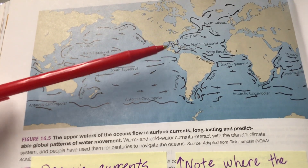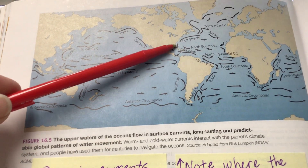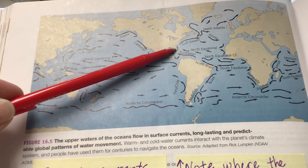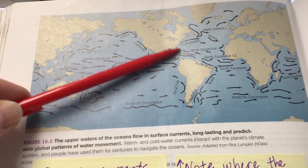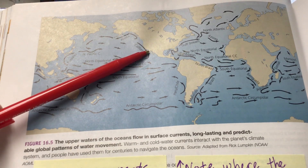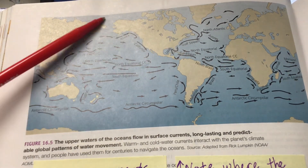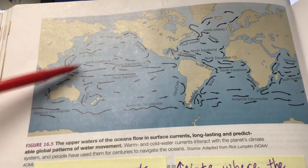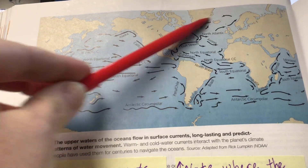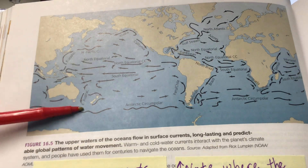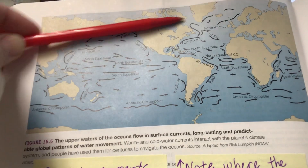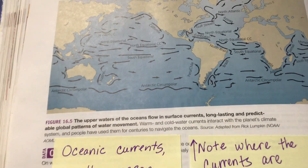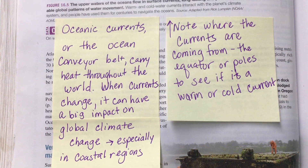If you've ever been to Florida, the Carolinas, or New Jersey in the summer, you'll notice the coastal towns are not that cool because the water is not that cool off the coast. Our coastal towns in California are very cool in the summer because the water is coming from the poles. On a test question, just be aware of where the currents are coming from. You don't need to memorize the currents — maybe the Gulf Stream — but for the rest, just look at where the current is coming from. If it's coming from the north or south pole, it's colder water. If it's coming from the equator, it's warmer water, and it's going to make the land warmer as well.